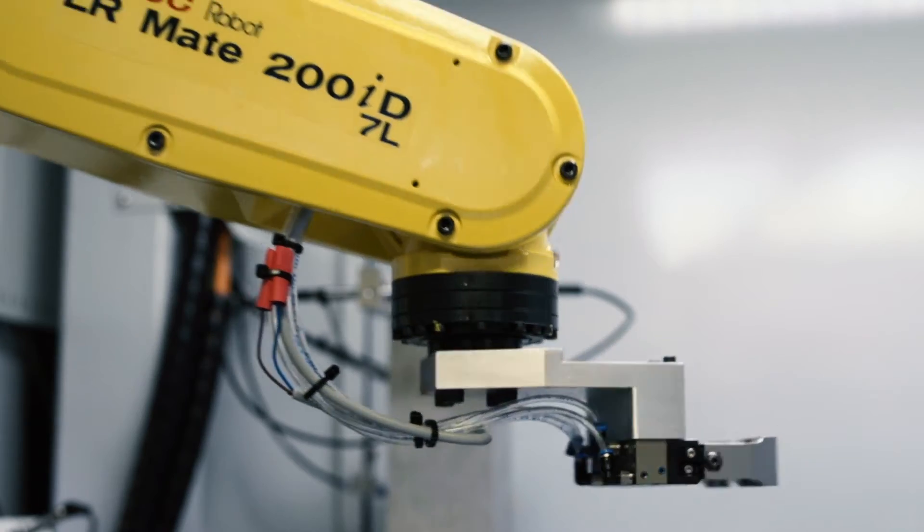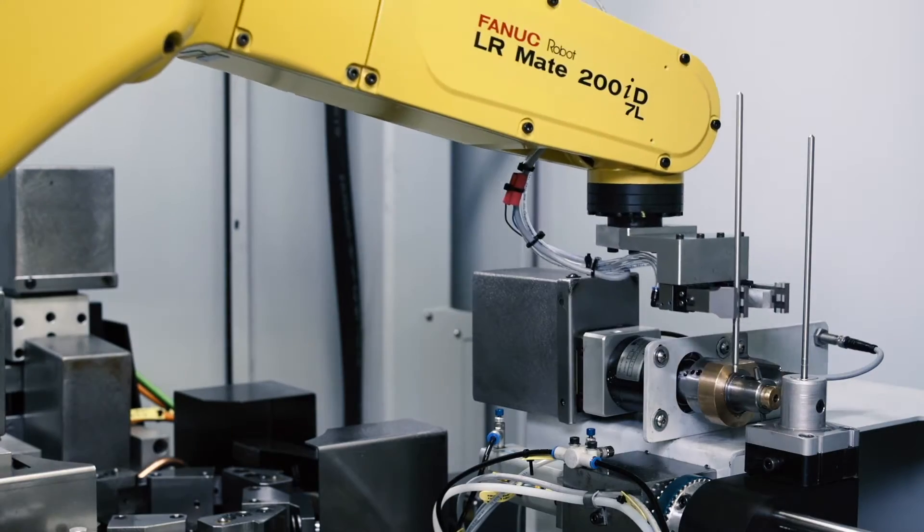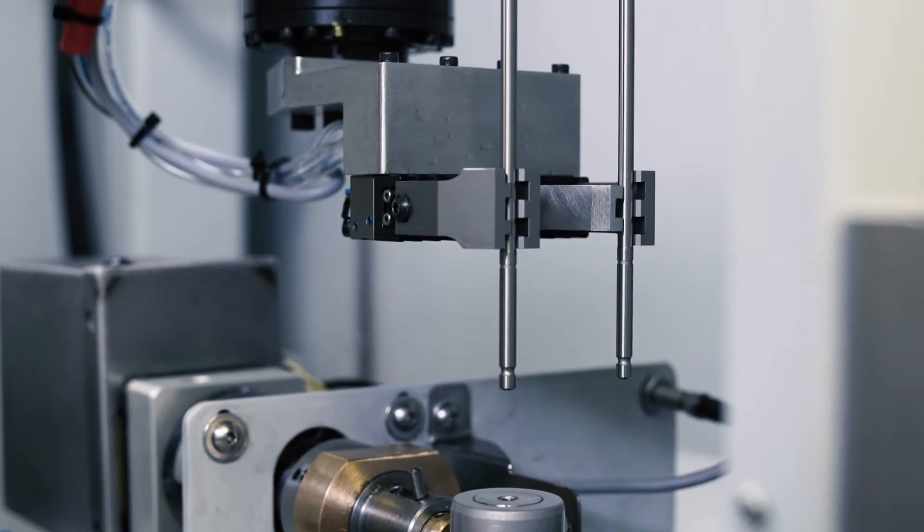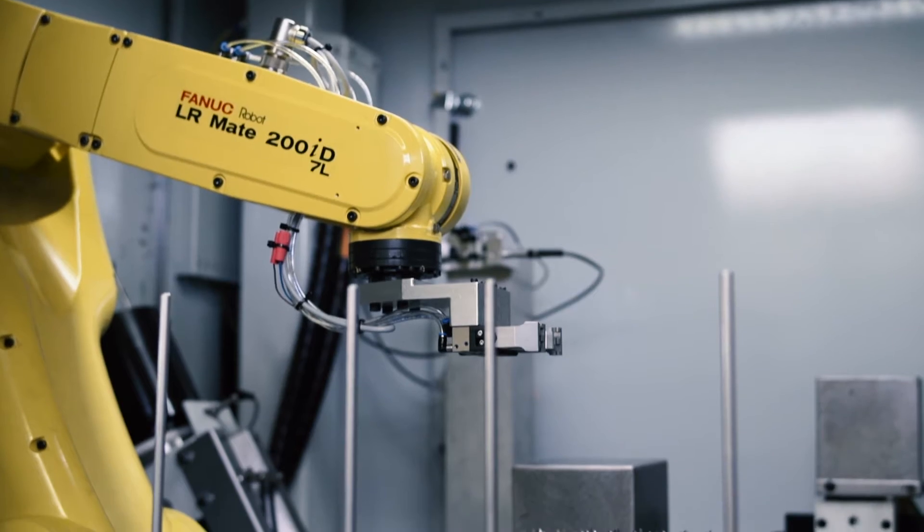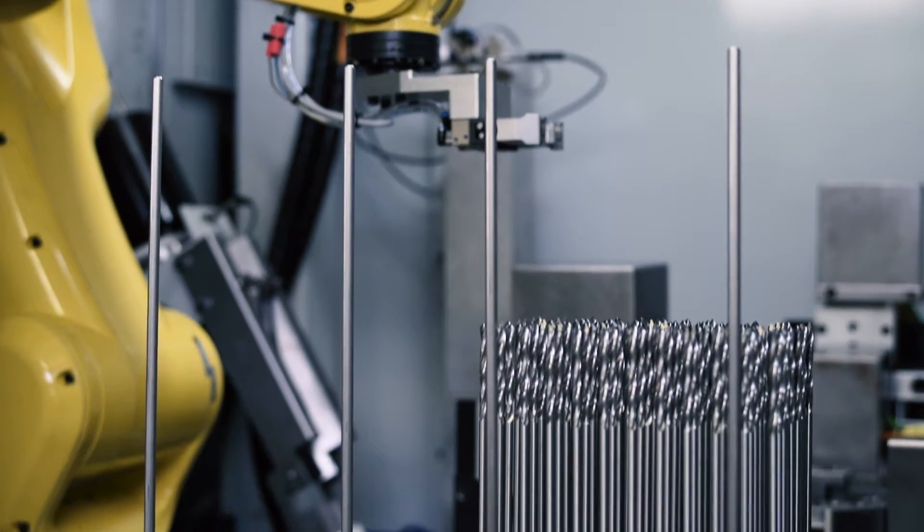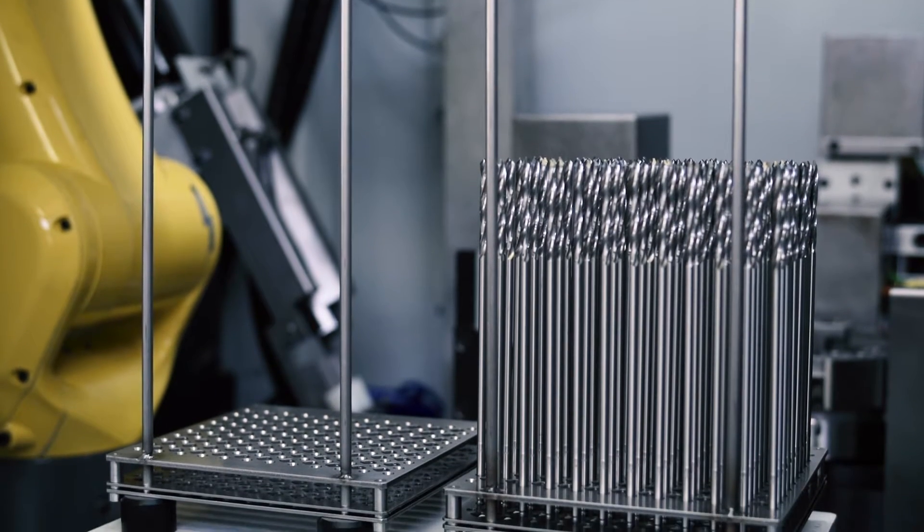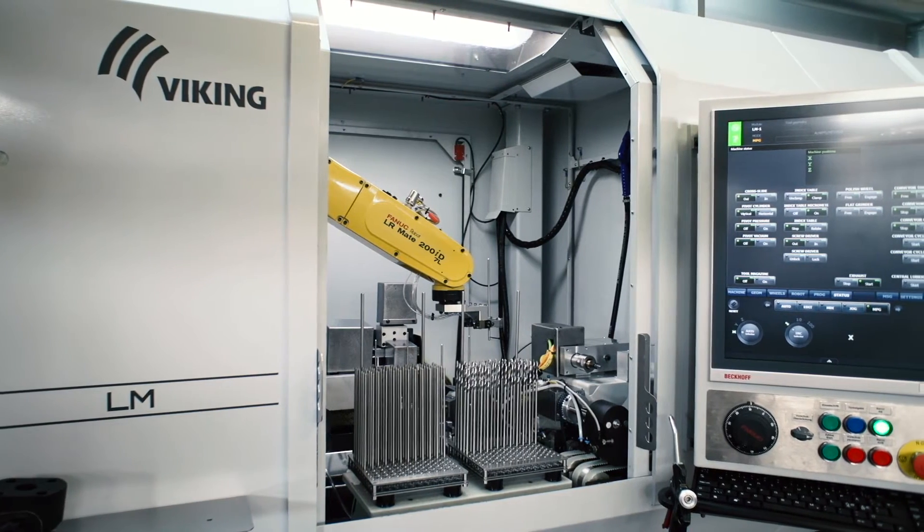The loader module is equipped with a FANUC robot placing the tool in the transfer tool holder. After completed machining, the tool is placed in a cassette which can be customized to match your existing storage system.